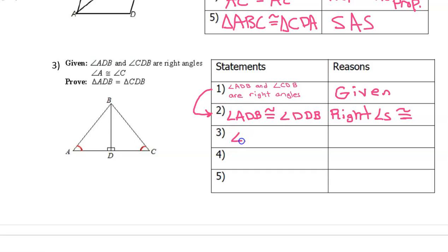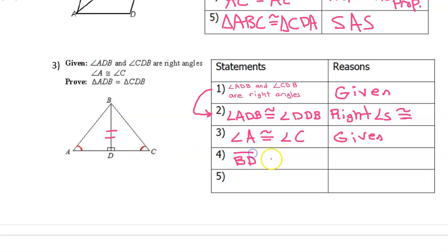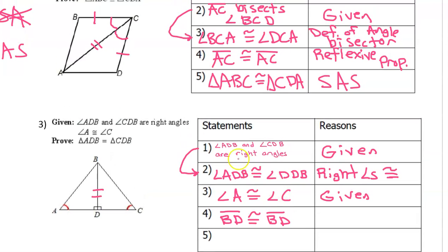Back to the given: we are given that angle A is congruent to angle C — that's another given, so let's put given, and it's already marked. So we've used up the given. Is there anything in the picture that we can mark automatically? Yes, shared side is one of those things we can mark automatically. When you mark the shared side, you simply say that the shared side is congruent to itself. So segment BD is congruent to segment BD. Remember the phrase we use whenever the shared side is congruent to itself — that's the reflexive property.